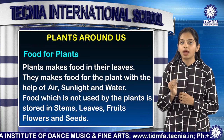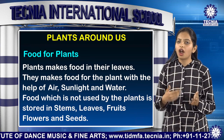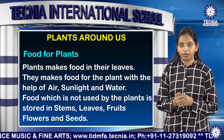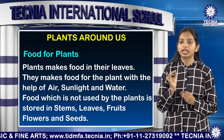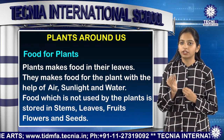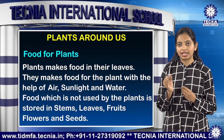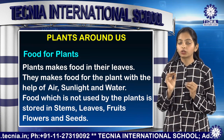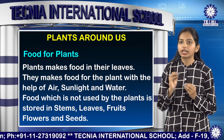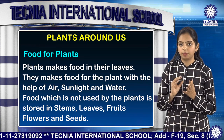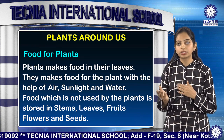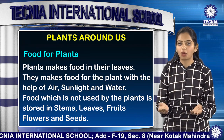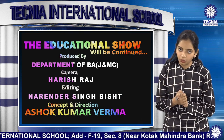Now let us learn about how plants make their food. Plants make their food in the leaves — the kitchen of the plant. Plants use sunlight, air and water to make their food. The food that is not used is stored in the parts of the plants like seeds, fruits etc. I hope that you have understood the topic plants around us. Thank you very much.